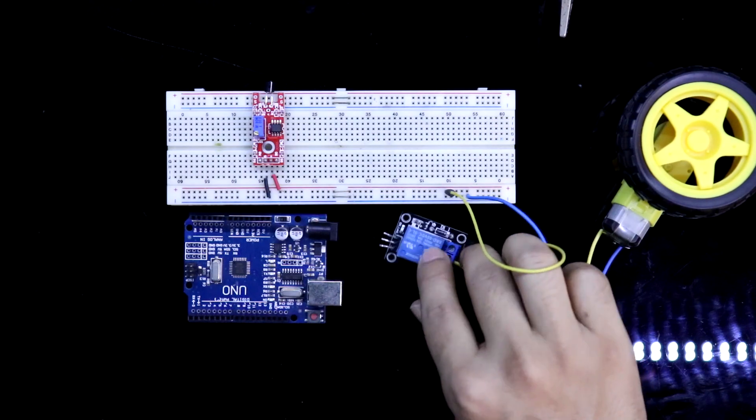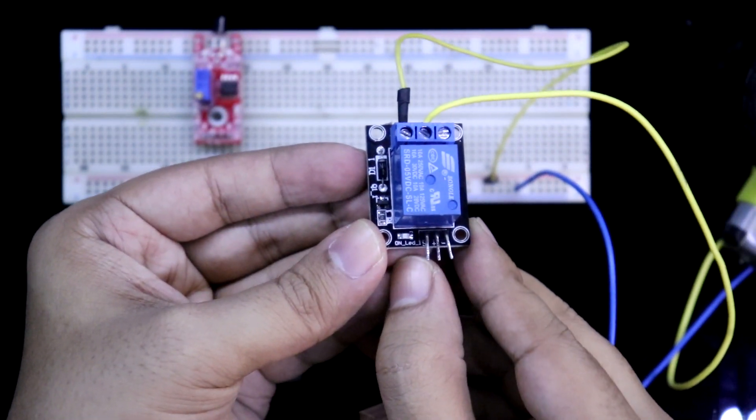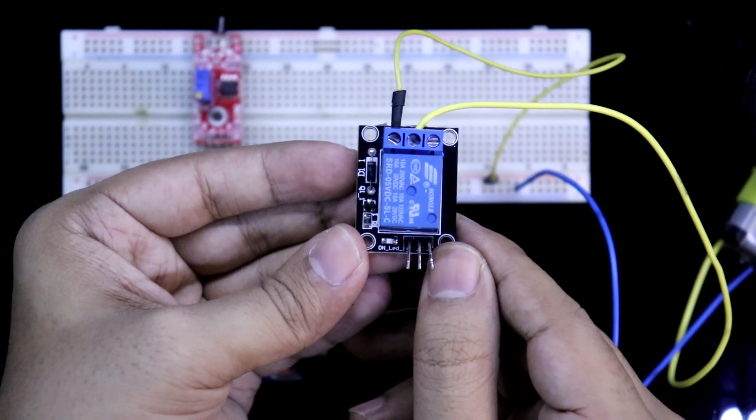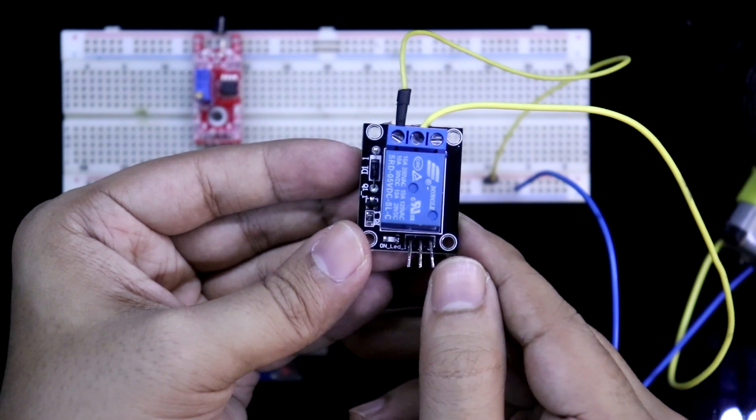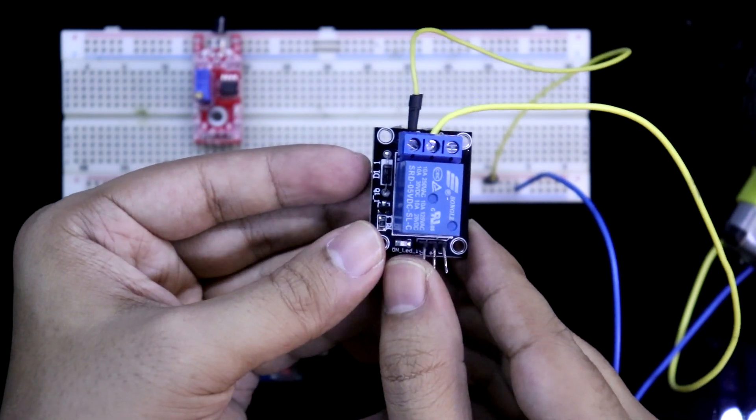Now we have three pins. If you see it like this, then the first pin is signal pin. Middle one is positive and the third one is negative. The positive and negative will be connected to the positive and negative rail. The signal pin will be connected to the Arduino.